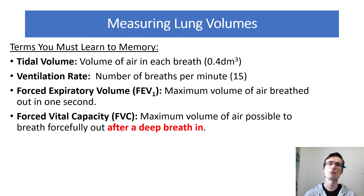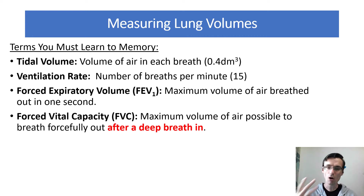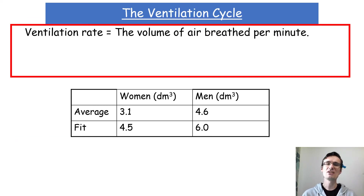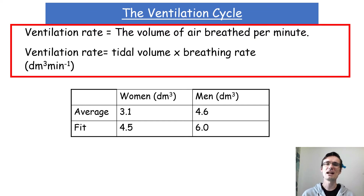The difference between FEV1 and forced vital capacity is that FEV1 is the amount breathed out in just one second, while forced vital capacity is the total amount you could force out after a deep breath in. You need to learn those because they link to the diseases. Ventilation rate is the volume of air breathed per minute — tidal volume multiplied by breathing rate per minute.